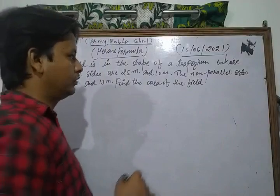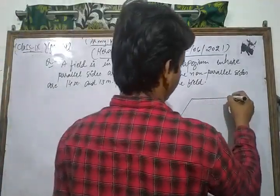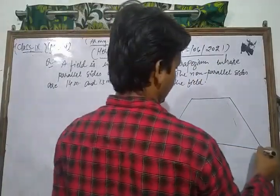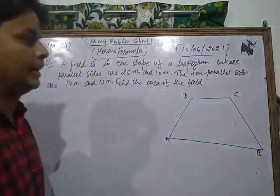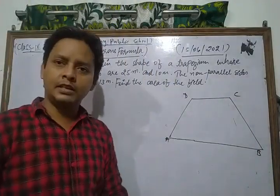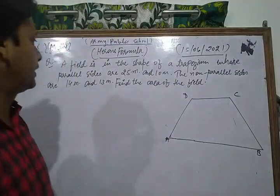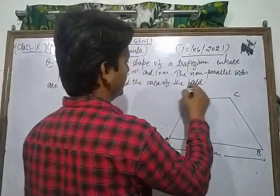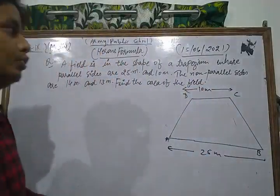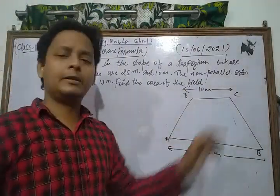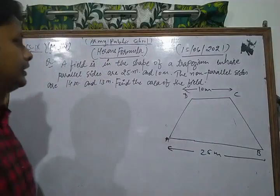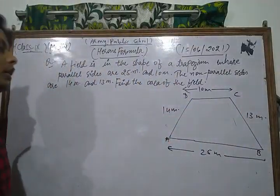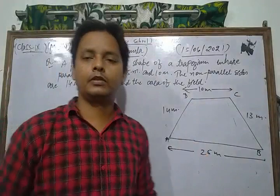First of all, since the field is in the shape of a trapezium, we draw trapezium ABCD where the two parallel sides are AB = 25 meters and CD = 10 meters, and the two non-parallel sides AD = 14 meters and BC = 13 meters. We need to find the area of trapezium ABCD.